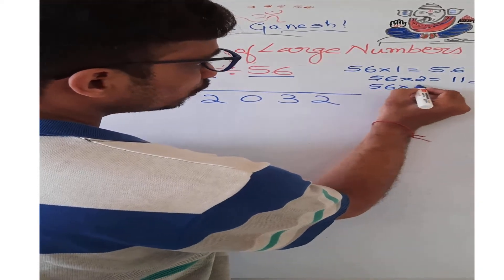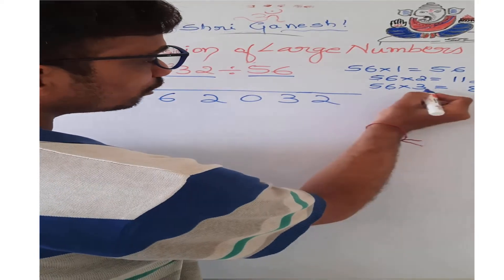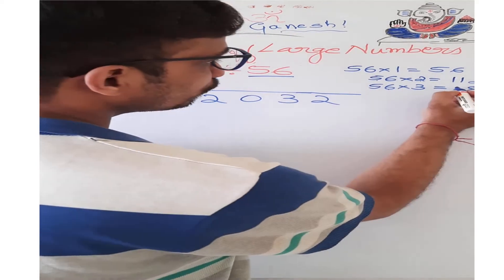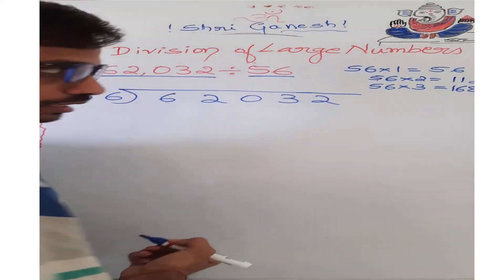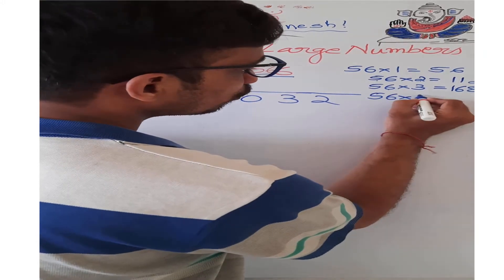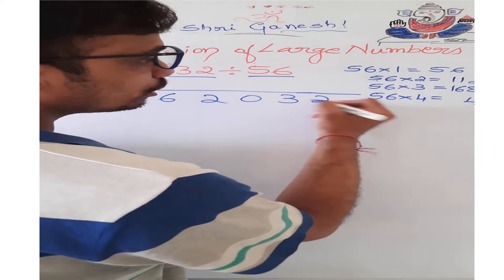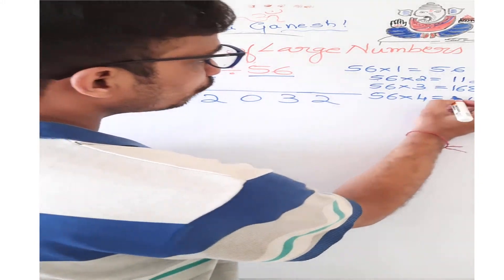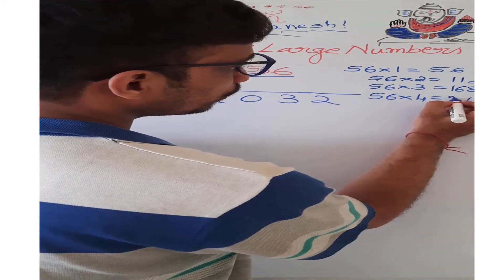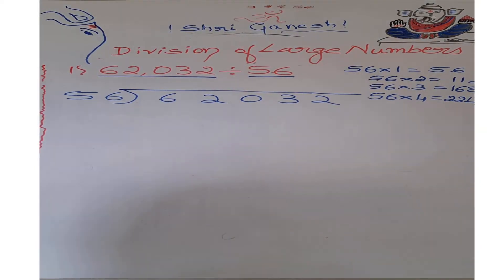56 into 3: 3 into 6 is 18, 8 here, 1 carry. 3 into 5 is 15, 15 plus 1 is 16. We got 168. 56 into 4: 4 into 6 is 24, 4 here, 2 carry. 4 into 5 is 20, 20 plus 2 is 22. We got it as 224.